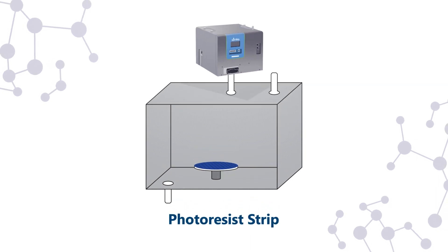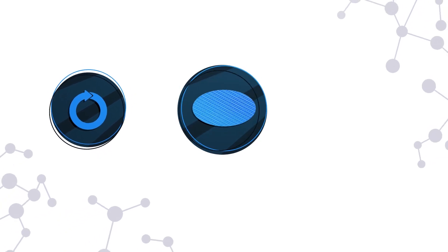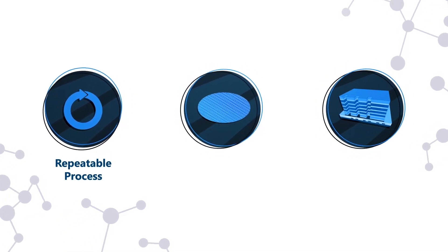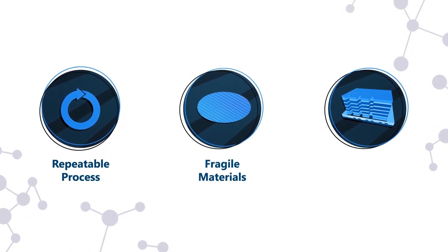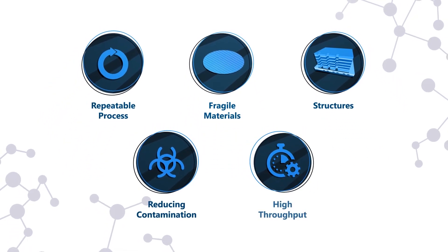A remote plasma source is used in Photo Resist Strip. An RPS must enable a uniform, repeatable process while avoiding damage to fragile materials and structures, reducing contamination, and maintaining high throughput.